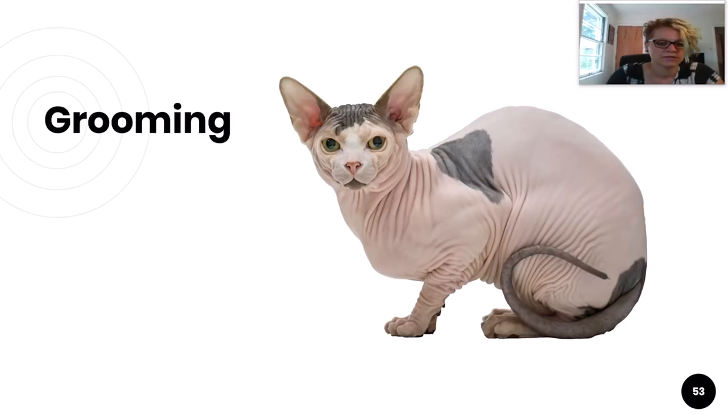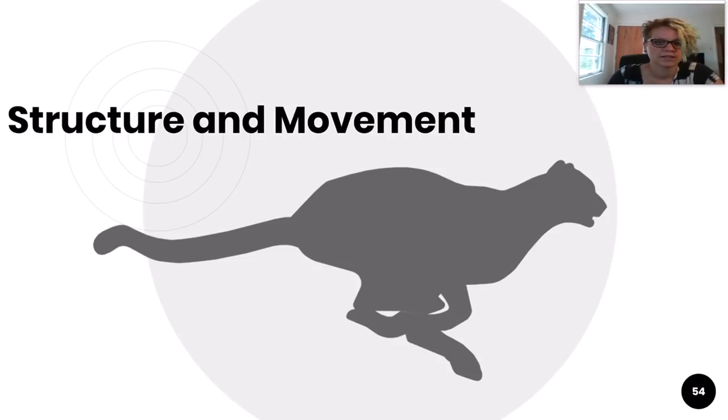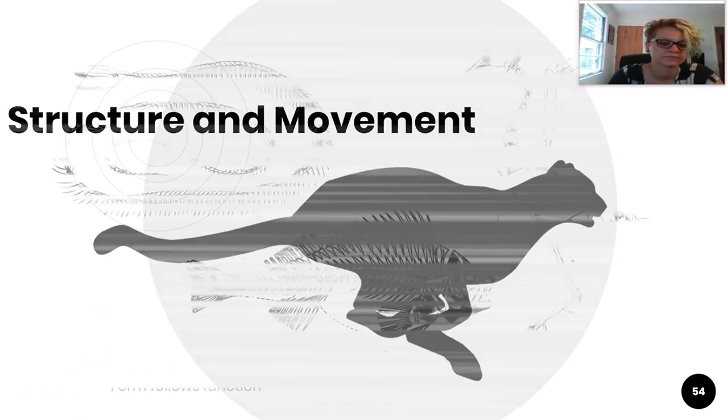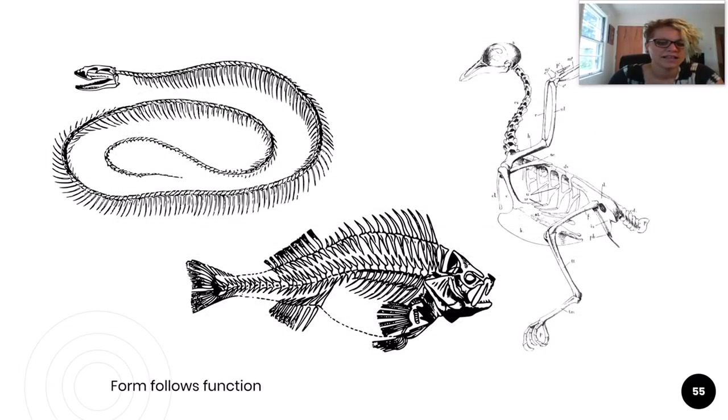So now that we've talked about thermoregulation, let's move on to structure and movement. When we talk about structure and movement, form follows function. The way animals are structured is entirely dependent on how they need to move to survive in their environment.